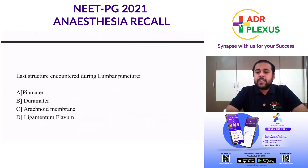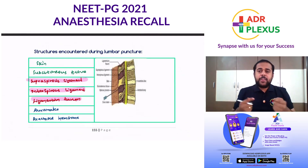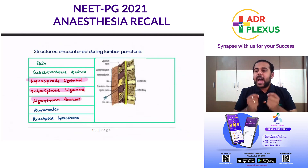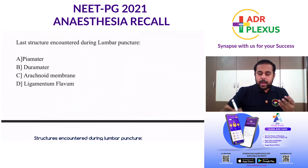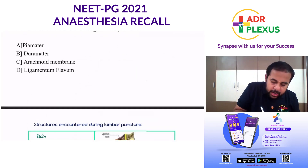Coming to the fourth question — this is the easiest question. The last structure encountered during lumbar puncture. We discussed this multiple times and on page number 155 you can see the structures from posterior to anterior: skin, subcutaneous tissue, supraspinous ligament, interspinous ligament, ligamentum flavum, dura mater, and arachnoid membrane. Once you pierce the arachnoid membrane you are in the subarachnoid space.